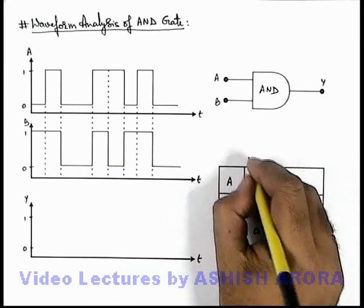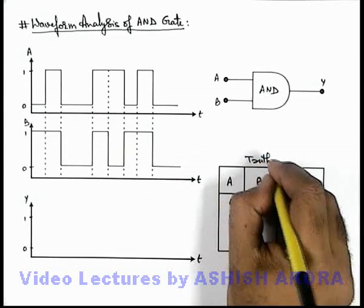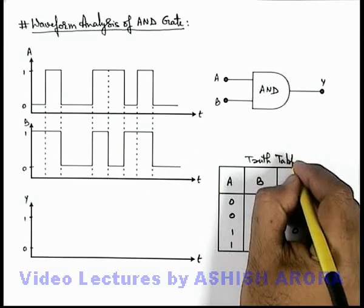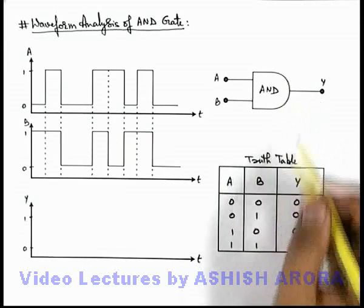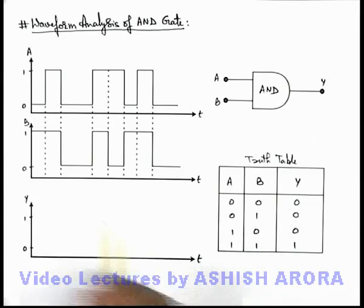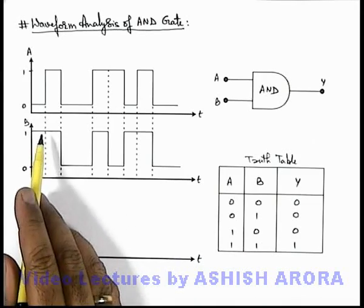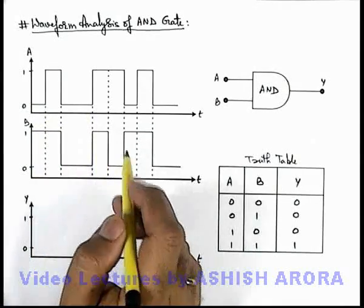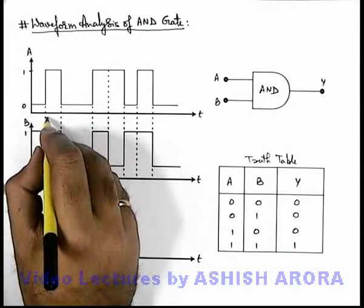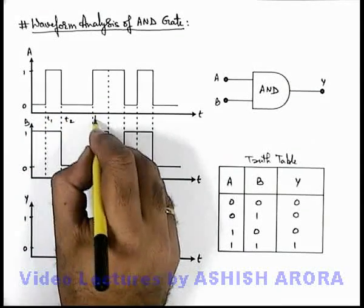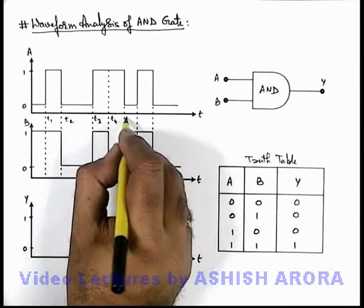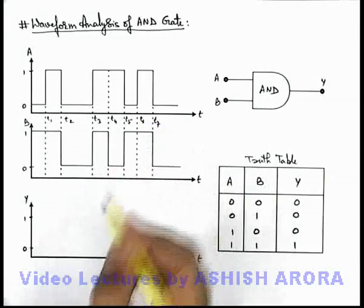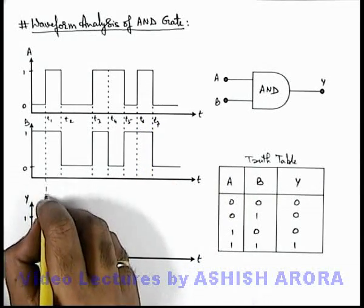Now in this situation, if we draw the output voltage of this AND gate according to this truth table, here we can see one by one there are some instants where either of the two signals are toggling. Say these are t1, t2, t3, t4, t5, t6, and t7.